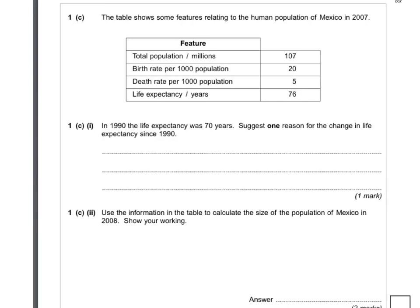This is a math question from January 11. It's about populations and how they change. Mexico, 2007. Population was 107 million. 20 births per 1,000 of the population. 5 deaths per 1,000 of the population. Life expectancy: 76.